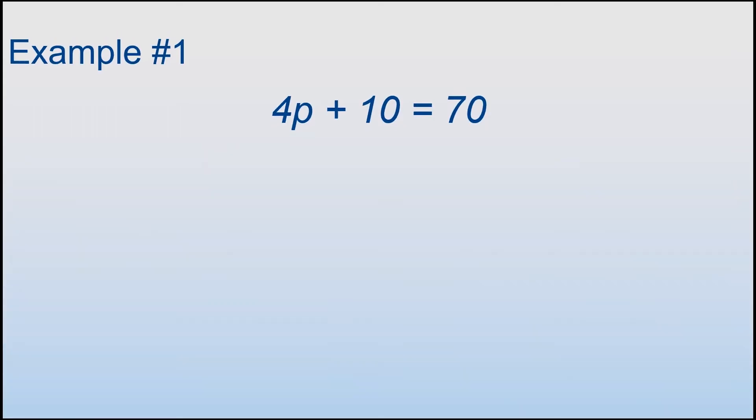Example number one: if you remember from the last slide, I explained that getting the variable on one side of the equal sign is your main goal. So right now we have a 4 over here with the P, which is the variable. We also have a 10 over here with the P. So we need to look at the type of operation that connects those numbers. Right now we need to add 10, so the opposite of adding 10 would be subtracting 10, so minus 10, and you have to do that to both sides.